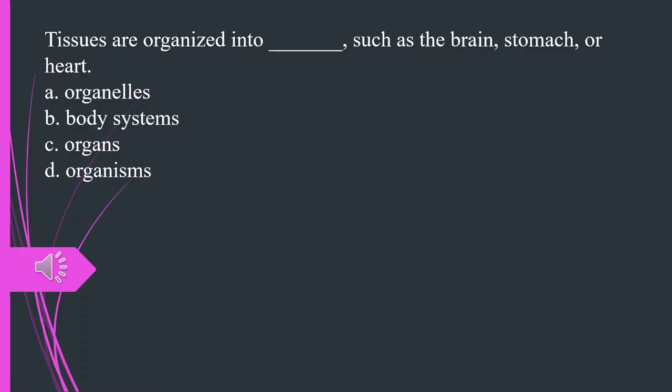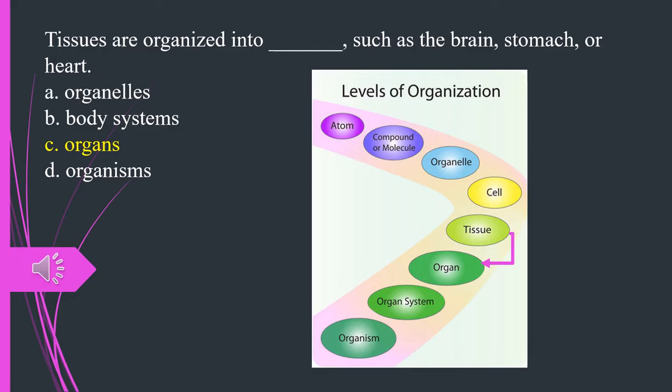Tissues are organized into what, such as the brain, stomach, or heart? A. Organelles. B. Body systems. C. Organs. D. Organisms. The answer is C. Organs.